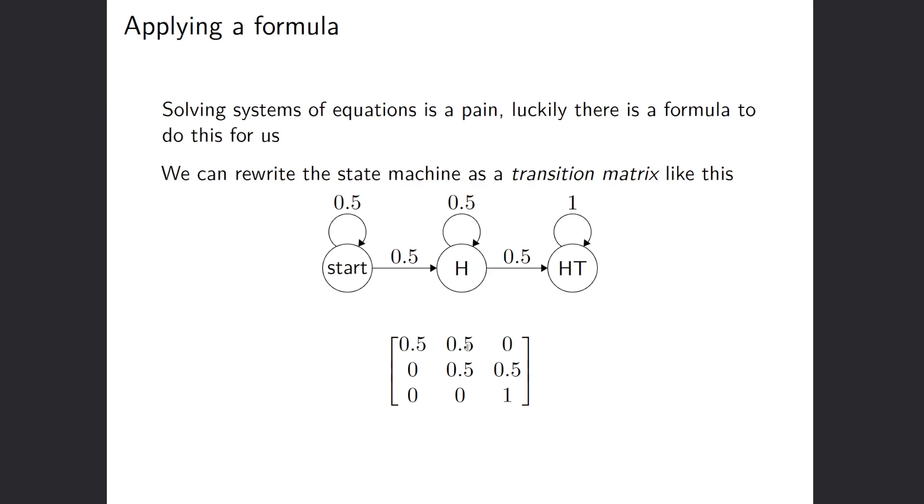The chance of going from start to, and this would be the heads column, start to heads, 0.5, and then start to heads tails, 0. So this basically lines up exactly with the state machine. You can just confirm that the rest also makes sense. So for instance, like heads tails, to go from heads tails to heads tails is 1, to go from heads to heads tails is 0.5, et cetera.